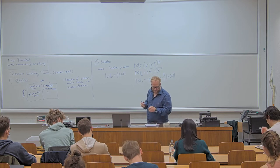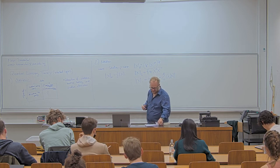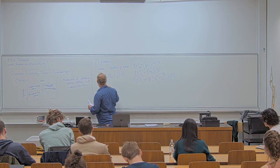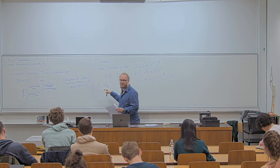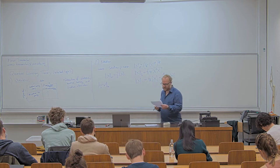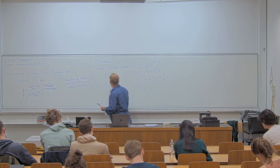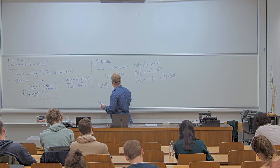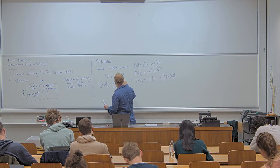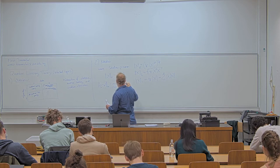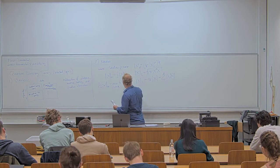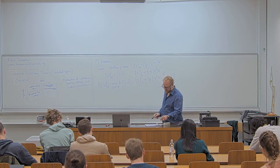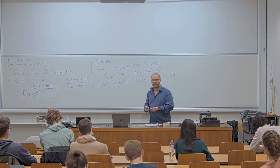Another thing I'll use — or you'll use in homework — is that the trace distance between two states ρ and σ can be written as an optimization problem: maximize over a positive operator P (with 0 ≤ P ≤ I) the quantity trace(P(ρ − σ)). If you haven't seen this, you can find the proof in your notes; for now I state it as fact.